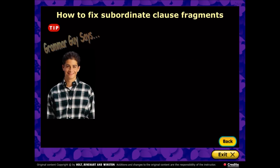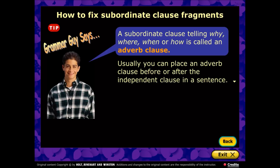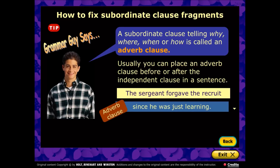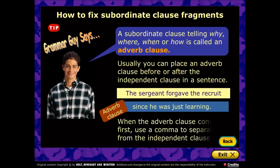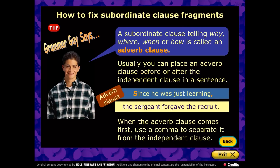Just like phrase fragments, there are two strategies: add words to form a complete sentence — 'who accepted responsibility' becomes 'I admire the man who accepted responsibility.' Strategy two: combine it with another sentence — 'Since he was just learning, the sergeant forgave him,' with a comma. The rule is: when a dependent clause comes first, put a comma before the independent clause. But if the independent clause comes first, like 'The sergeant forgave the recruit since he was just learning,' you do not use a comma before the dependent clause.